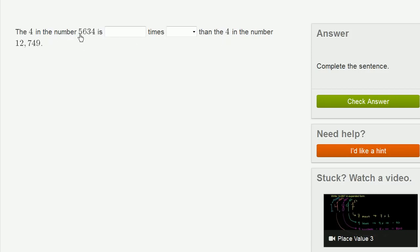So let's think about what they're saying. So the 4 in the number 5,634, that's literally in the ones place. It literally just represents 4. Now, the 4 in the number 12,749, that 4 is in the tens place. It represents 40.